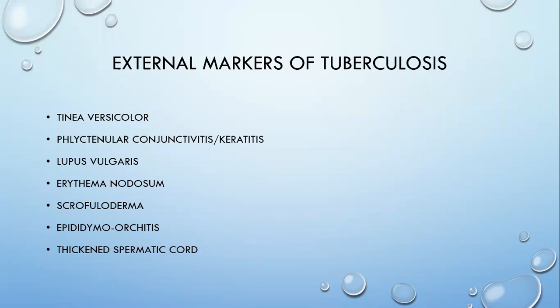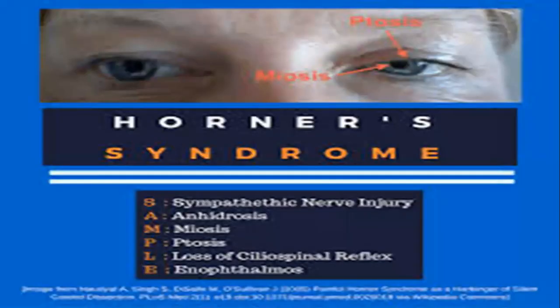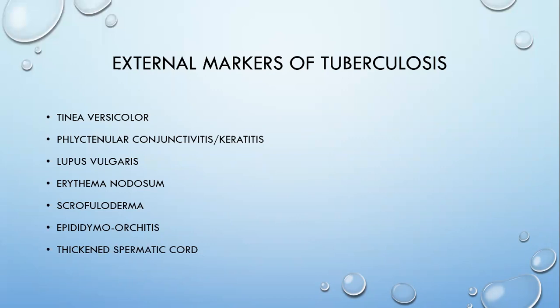We just covered general appearance, posture of the patient, specific features in the face, eyes, nails, and neck, nutrition status, and paraneoplastic skin markers. There are two special entities to look for in the respiratory system: external markers of tuberculosis and Horner syndrome. The external markers of tuberculosis include phlyctenular conjunctivitis, erythema nodosum, lupus vulgaris in the skin, scrofuloderma — which is lymph node examination with ulceration in the neck — and epididymo-orchitis with thickened spermatic cord. Even without epididymo-orchitis, a thickened spermatic cord alone points towards tuberculosis.